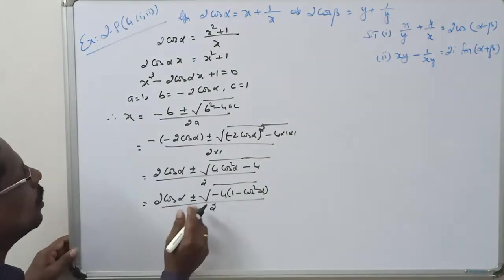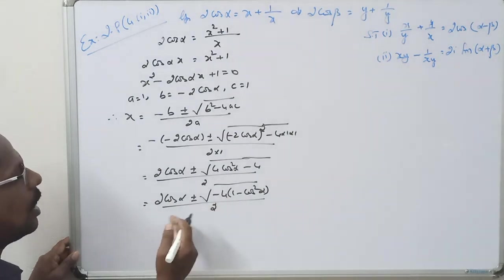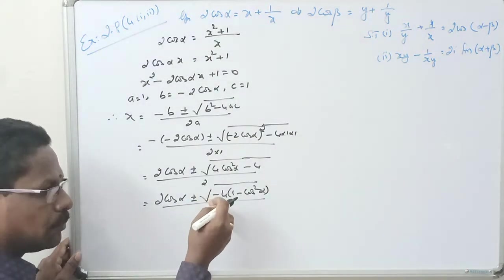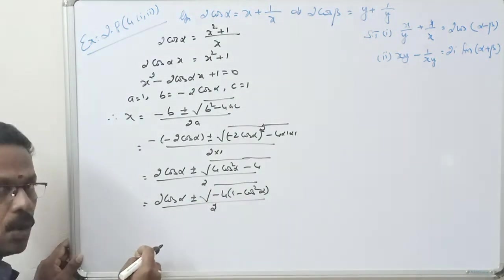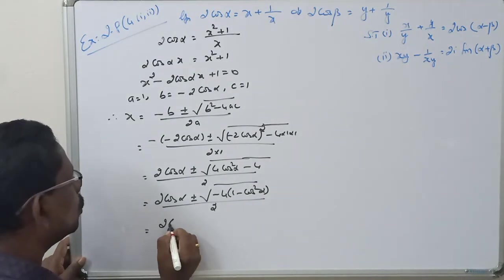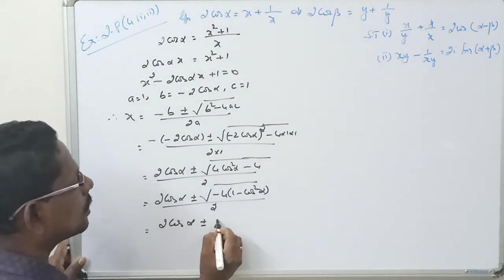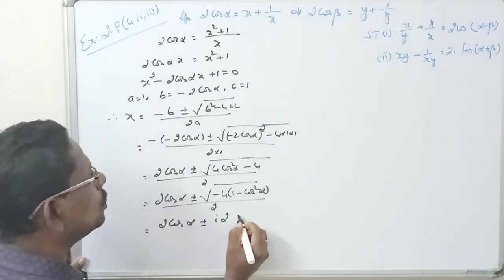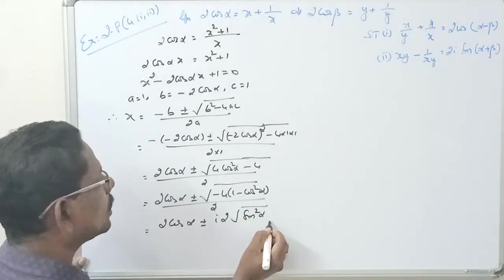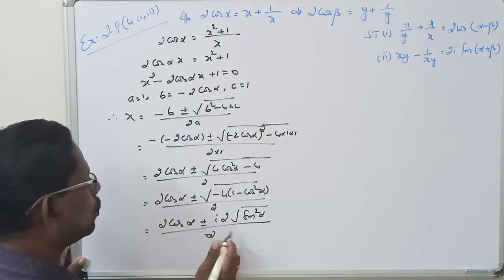Now, minus 4 is taken out. When minus comes out from the square root, it becomes i. Therefore the expression becomes: 2cos α plus or minus i · 2 · square root of sin²α, all divided by 2.